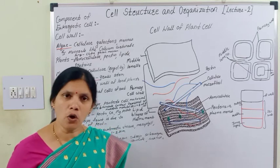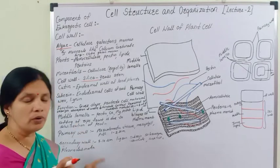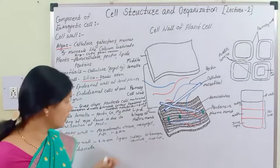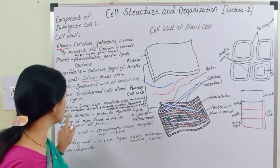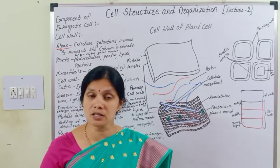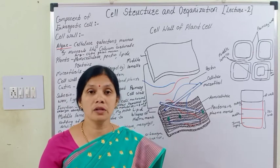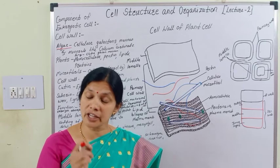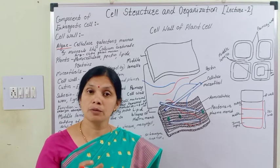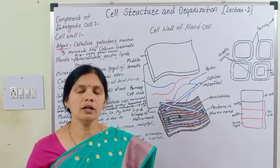During the ripening of fruits, the fruit wall which is present becomes soft — softening of the ripe fruit is due to the solubilization of pectin. Due to solubilization of the pectin of the middle lamella during the ripening of the fruit, the fruit wall becomes soft.